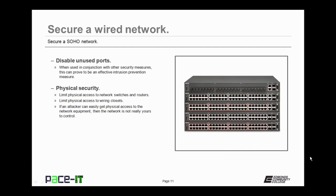Which also brings us to the next step: physical security of the equipment. You need to limit the physical access to the network switches and routers, as well as to wiring closets and punch down panels. If an attacker can easily get physical access to network equipment and wiring, then it's not really your network to control.